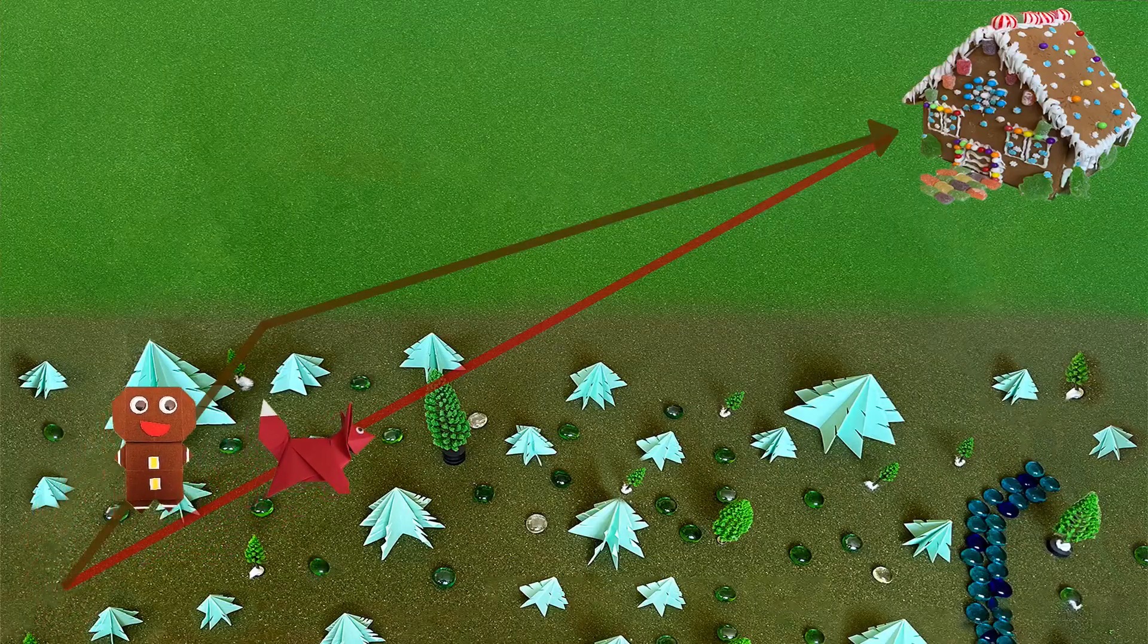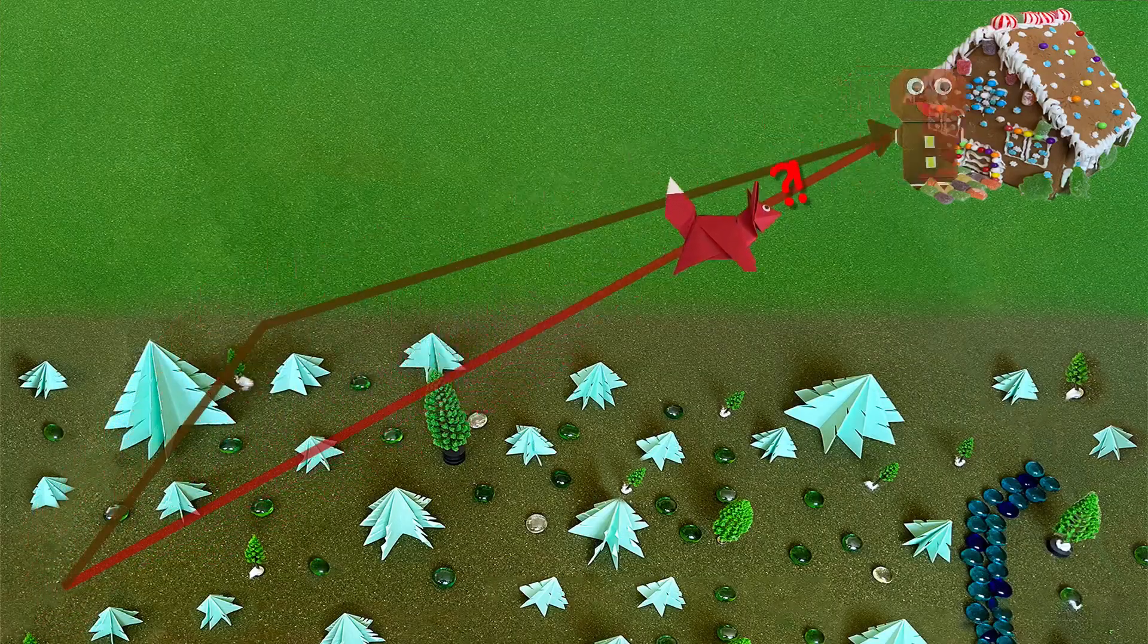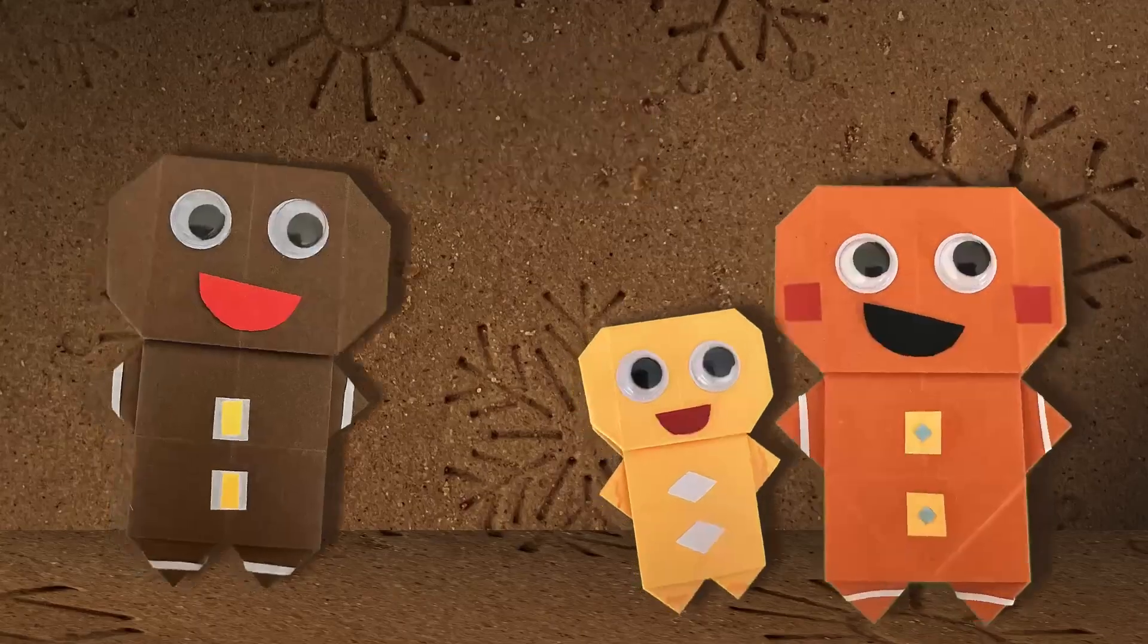And so, knowing this, the gingerbread man takes a longer, but faster route. He gets home before the fox and warns his family in time.